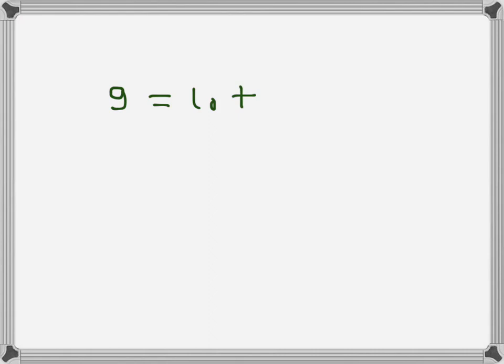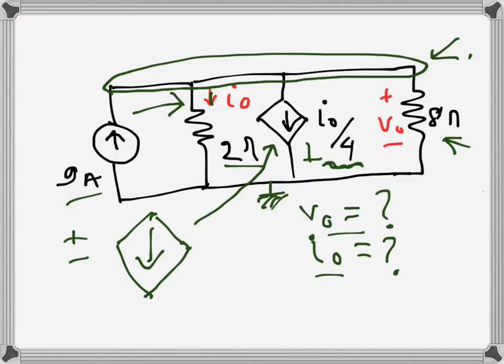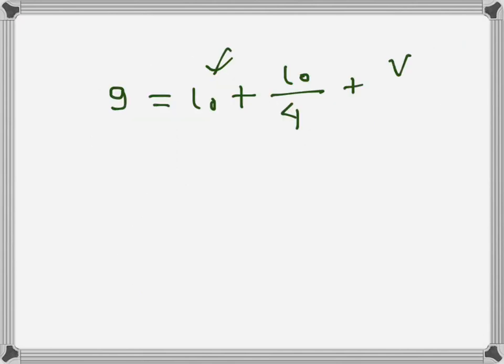This current is also going down, and its value depends on i_naught, which is the current through the 2-ohm resistance. Then we have to find the current of the 8-ohm branch. Recalling Ohm's law, current equals voltage divided by resistance, and the voltage is v_naught, so this current will be v_naught over 8.